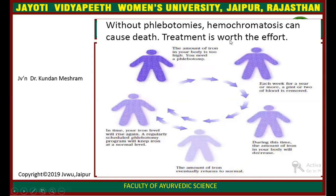Without phlebotomy, hemochromatosis can cause serious harm. Treatment is worth the effort. When the amount of iron in the body is too high, phlebotomy is needed. In each session, 1 to 2 units of blood are removed weekly for a year or more. During this time, the amount of iron in the body will decrease. The amount of iron eventually returns to normal, but in time the iron level will rise again, so a regularly scheduled phlebotomy program will keep iron at normal levels.